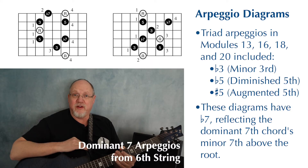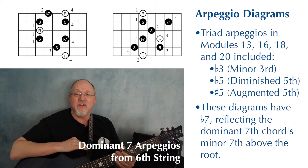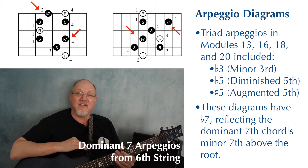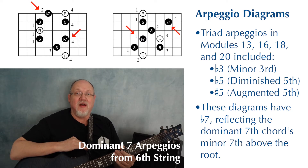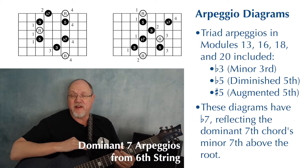In earlier modules where you learned triad arpeggios, you saw flat threes, flat fives, and sharp fives in the diagrams. The flat three was for minor third, the flat five was for diminished fifth, and the sharp five was for augmented fifth. In these diagrams, you're gonna see flat sevens. A seven in non-classical music would indicate a major seventh. A flat seven is a minor seven. And since we're doing dominant seven arpeggios, which have minor sevens, you're gonna see flat sevens in the diagrams.